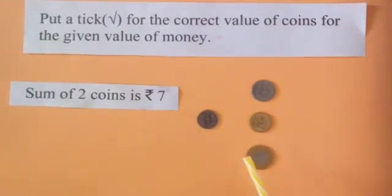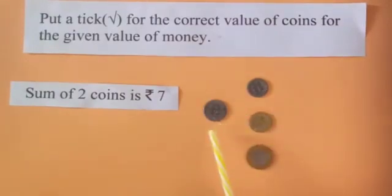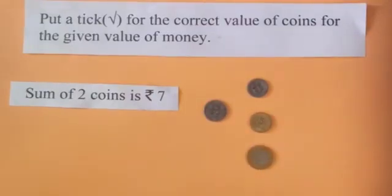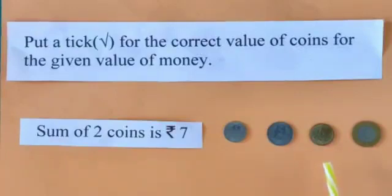Now we will find the value of other coins along with the 2 rupee coin. What is the value of 2 rupee coin and 1 rupee coin? It is rupees 3. 2 rupee coin and 5 rupee coin is rupees 7. What is the value of 2 rupee coin and 10 rupee coin? It is 12 rupees. So which 2 coins have the value of rupees 7? It is 2 rupee coin and 5 rupee coin. So we will put a tick in front of 2 rupee coin and 5 rupee coin.